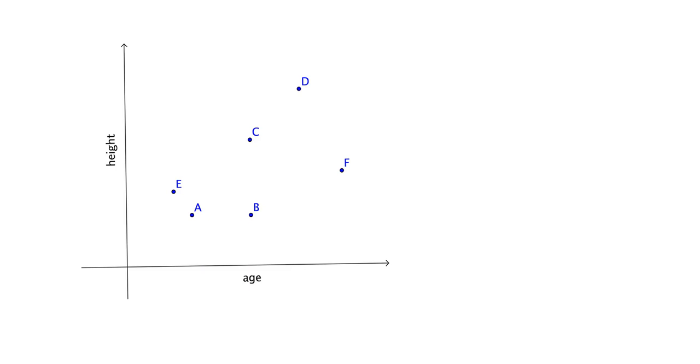Imagine I went out and found six people, and let's call them A, B, C, D, E, and F to make their names simple. I get their age and measure them to work out how tall they are, then plot that information onto a set of axes that looks like this.